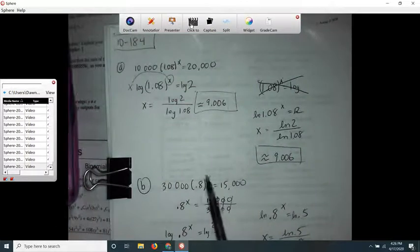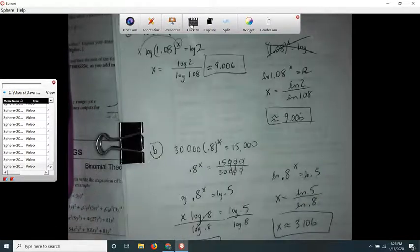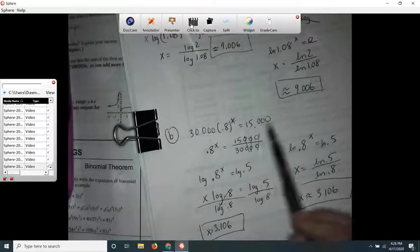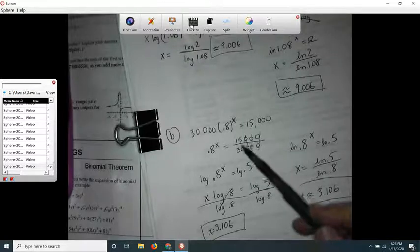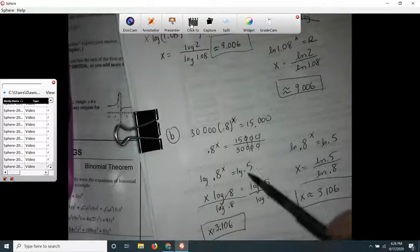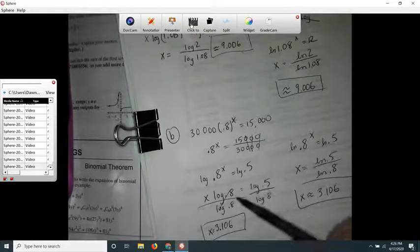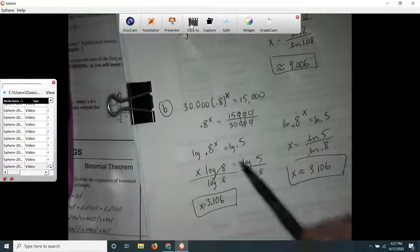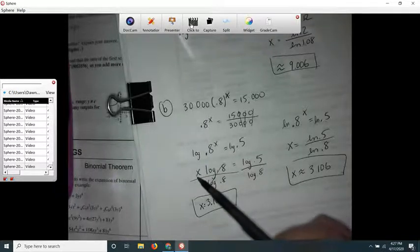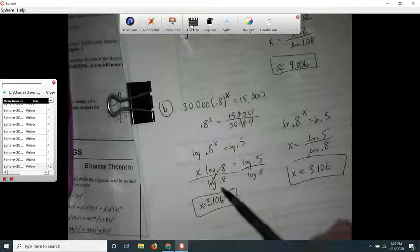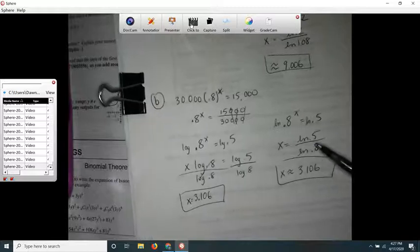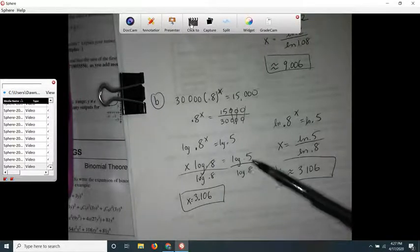Letter b would do it the exact same way. I divided both sides by 30,000, and then I realized that this ends up—I just did it in my head—15 over 30, that's 0.5. Then I logged both sides and used that law of logarithms. The property says the x can come out front, divided both sides by log 0.8, pushed the buttons in my calculator. I'm showing right over here that I would get the exact same thing if I ln both sides.